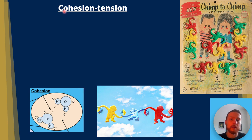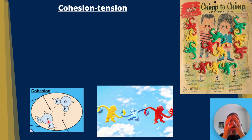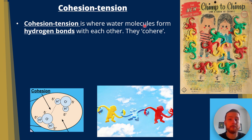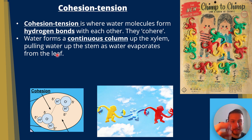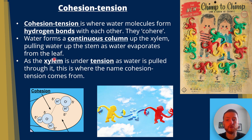Cohesion tension is something you really need to know for AQA A-level biology. It's where the positive hydrogen in water is attracted to the negative oxygen, and they exert cohesion together. Cohesion means to stick together — water molecules form hydrogen bonds with each other. Water forms a continuous column up the xylem, pulling water up the stem as water evaporates from the leaf. As the xylem is under tension as water is pulled through it, this is where the name cohesion tension comes from.